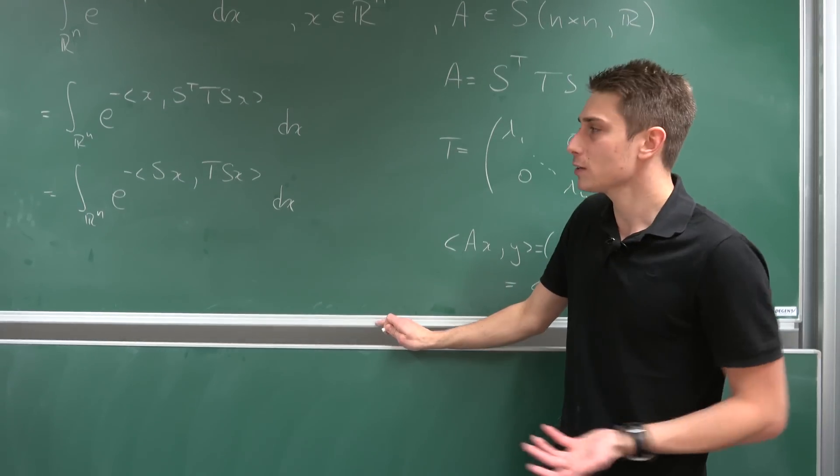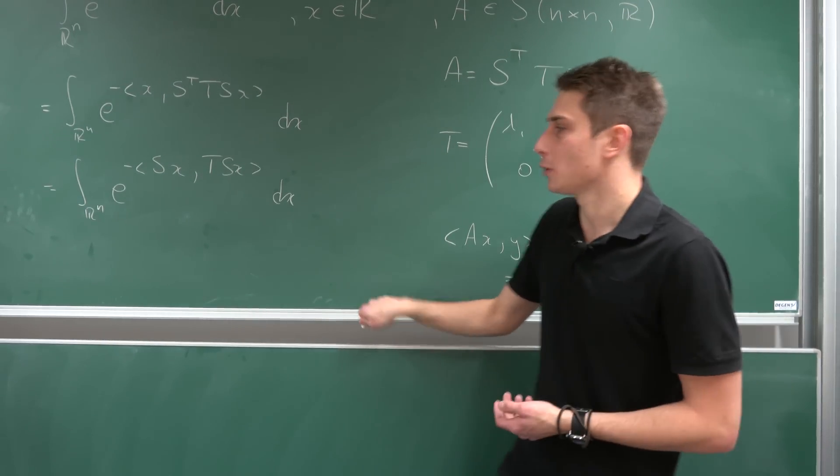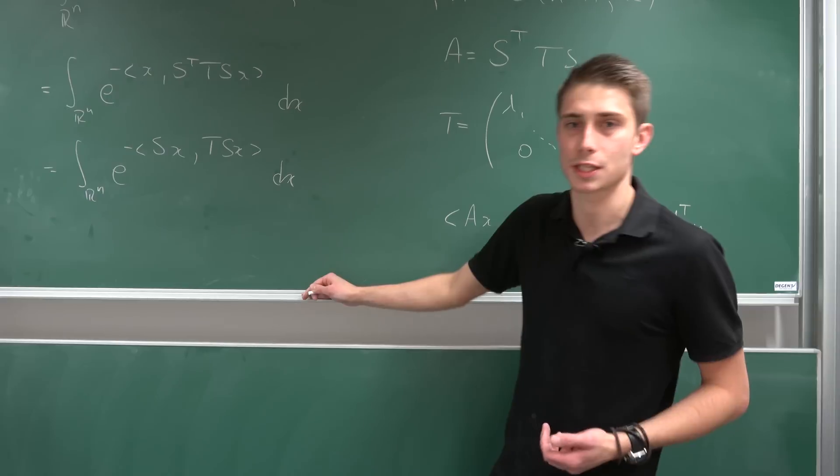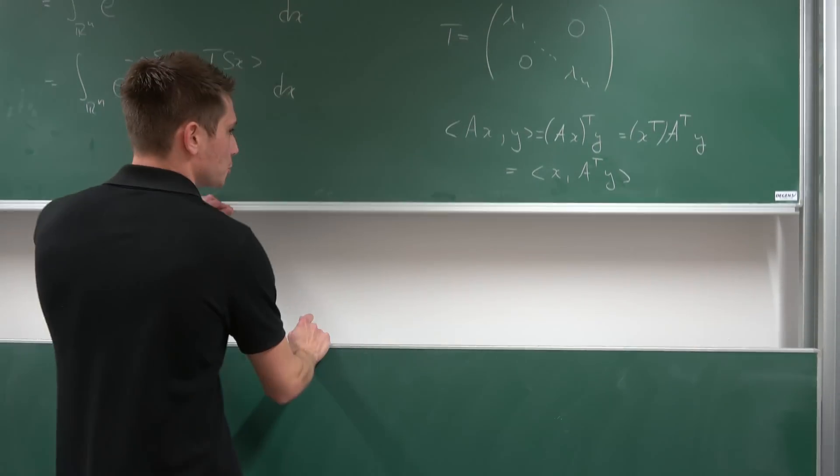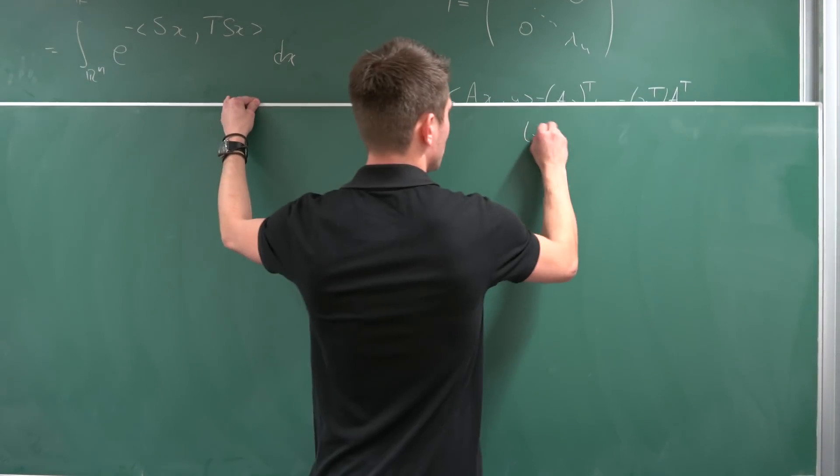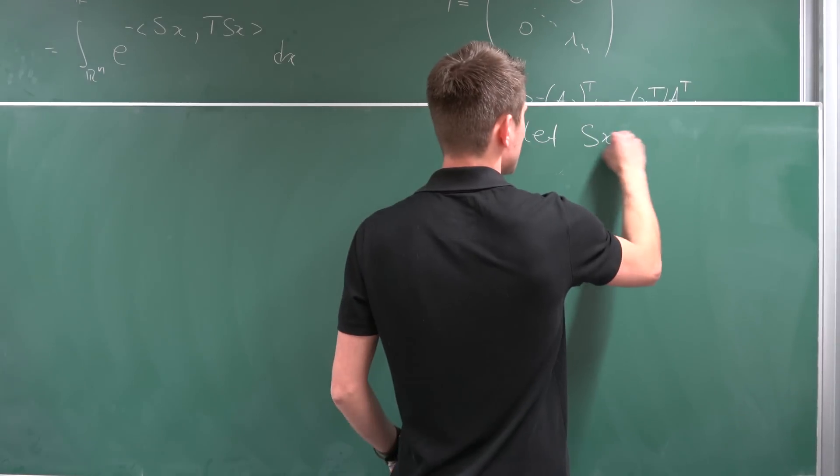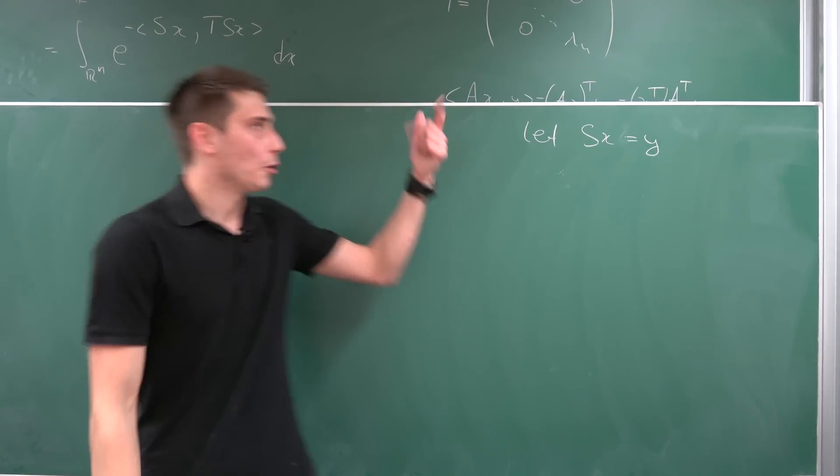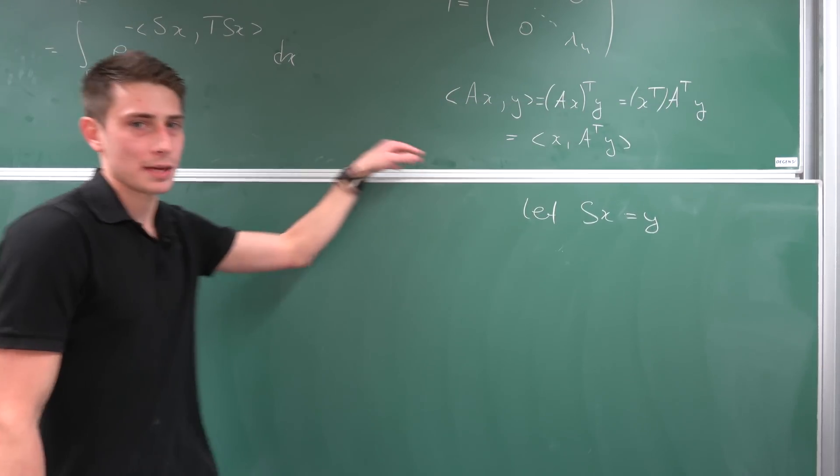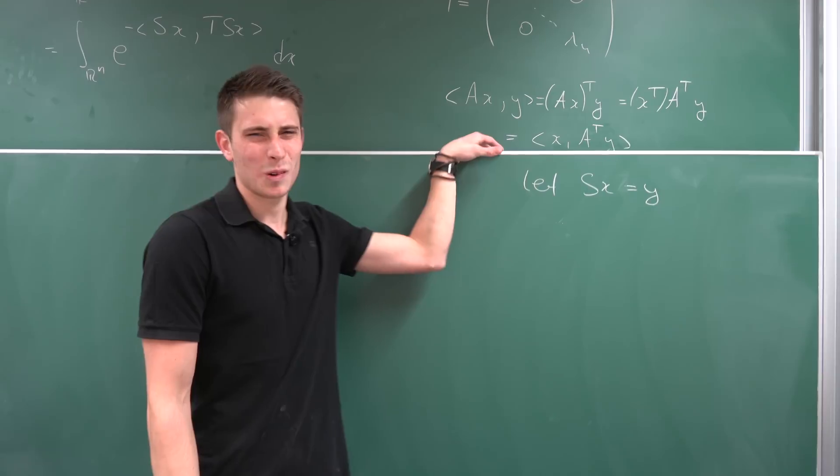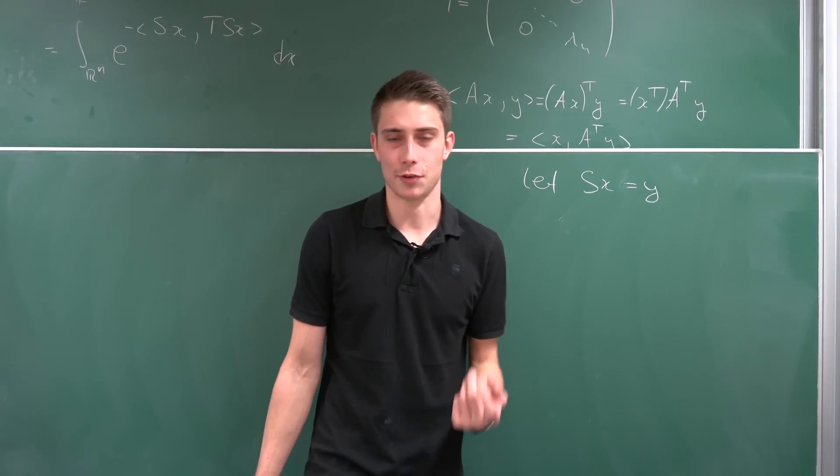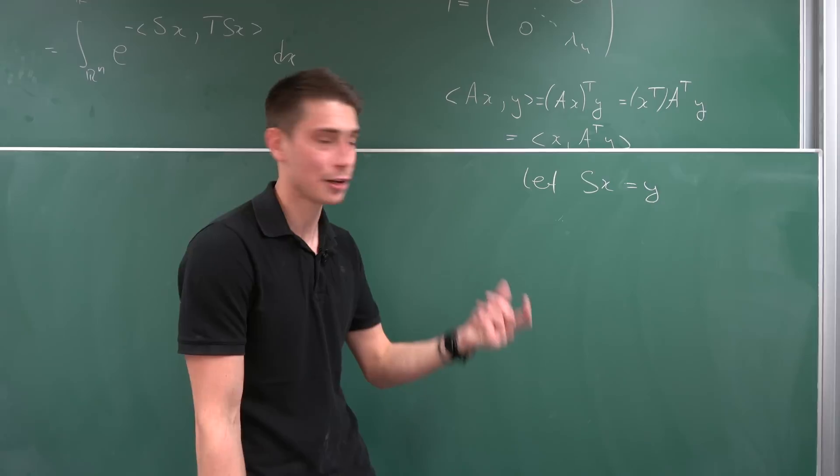And now we can, well, move on because we can make a change of variables in here. In other words, introduce a little substitution. So we want to let our s times x be equal to some vector y, for example. We are working in more than one dimension at the moment. So when differentiating both sides, we have to end up with a little scaling factor called the Jacobian.